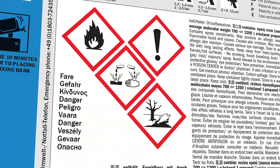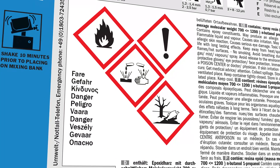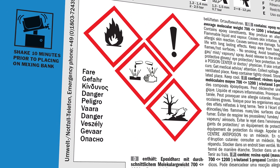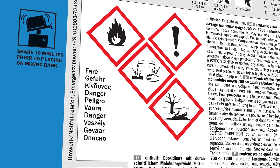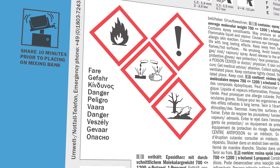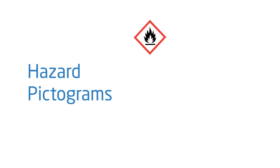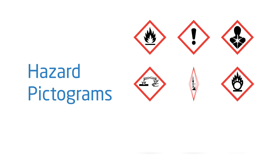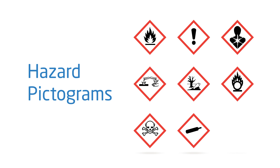Pictograms are incorporated into the CLP label to help visually indicate potential hazards at a glance. A pictogram is square in shape, set at a point, and includes a black hazard symbol on a white background with a red frame.